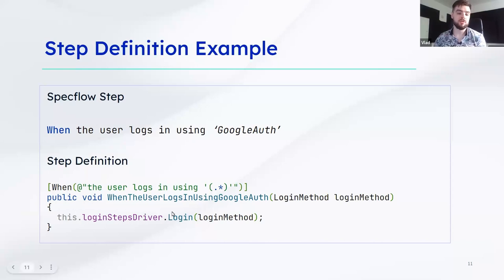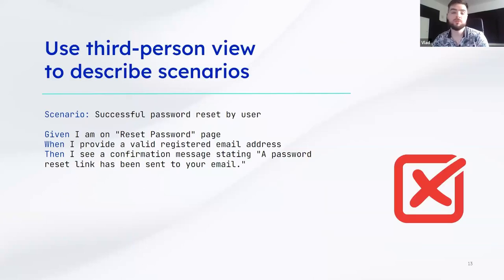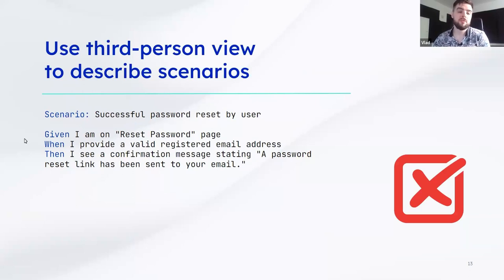Let's move to best practices in SpecFlow. The first thing you should do when writing tests using SpecFlow and BDD in general is use a third-person view to describe the scenarios. An example of an incorrectly written SpecFlow test uses a first-person view — 'Given I am on a reset password page, when I provide the email address, then I see a confirmation message.' The problem is: who is 'I'? Is it the tester, the stakeholder? It's confusing.